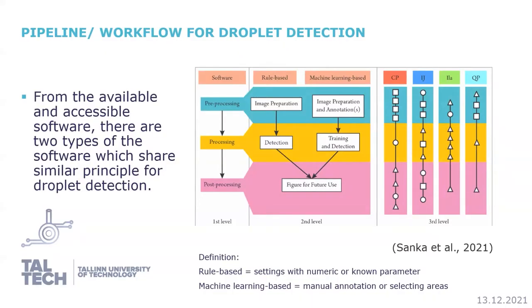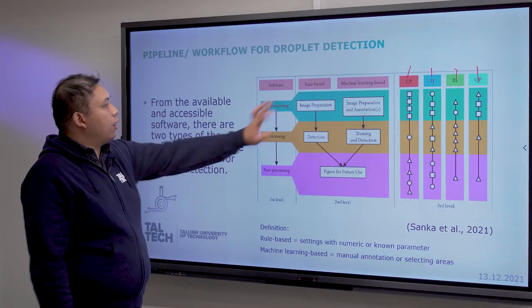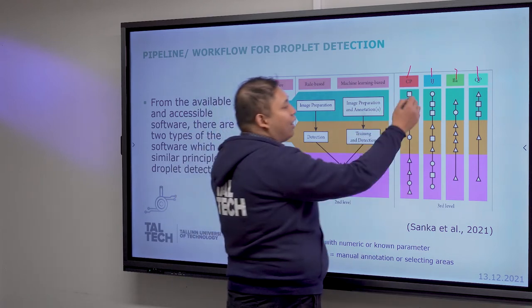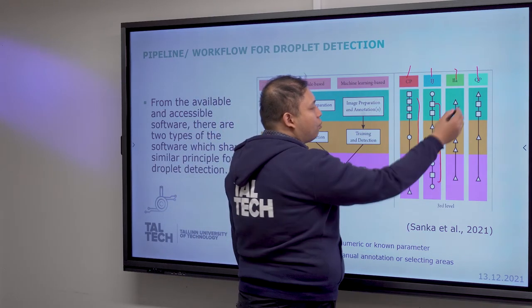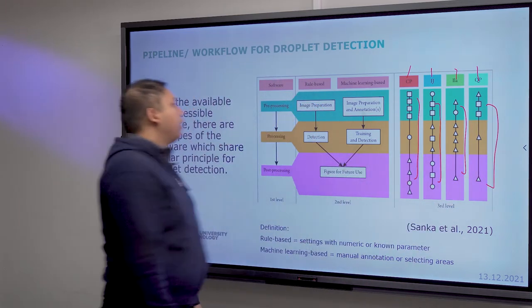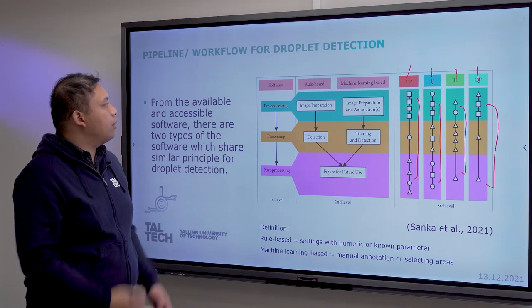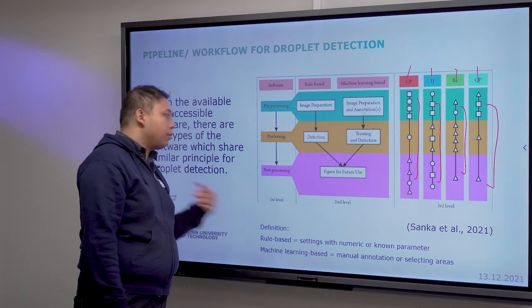In our recent work, we tried to choose the most popular software using Twitter and published articles, and we identified four: CP for CellProfiler, IJ for ImageJ, LA for ELASTIC, and QPath for QuPath. These tools have different components and construct different pipelines, but they all share a similar principle of pre-processing, processing, and post-processing.